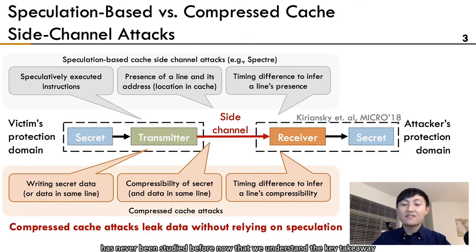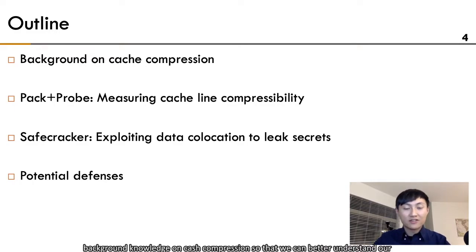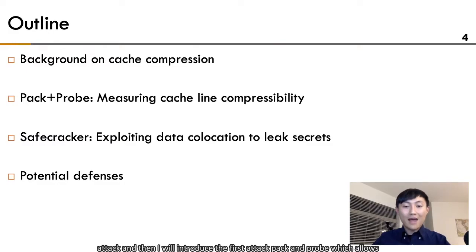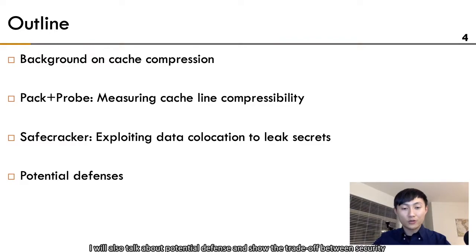In fact, this new hardware vulnerability has never been studied before. For the rest of the talk, I'm going to first explain the background knowledge on cache compression so we can better understand our attack. Then I will introduce the first attack, Pack and Probe, which allows the attacker to measure cache line compressibility. Then the second attack, Safecracker, which allows the attacker to exploit data collocation to leak secrets. I will also talk about potential defenses and show the trade-off between security and performance.